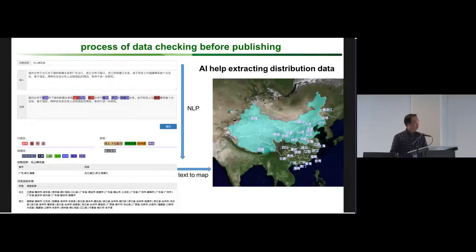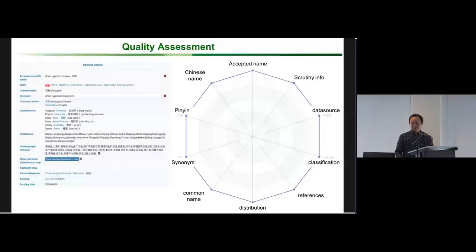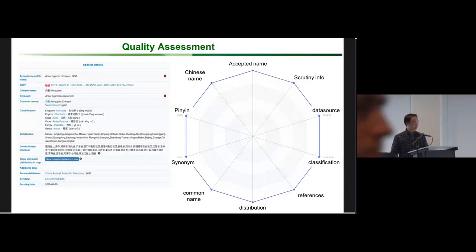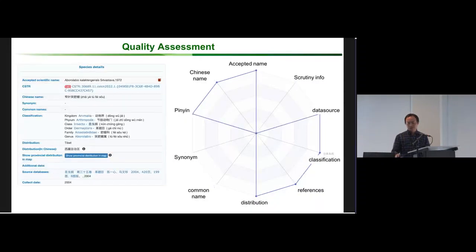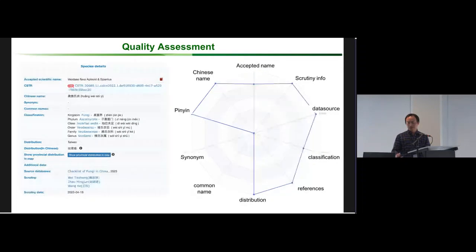This slide shows we use AI to extract distribution data using natural language processing. After we integrate all the data, we assess the quality of each species from multiple dimensions. You can see that some species records are complete, while others are missing some information.